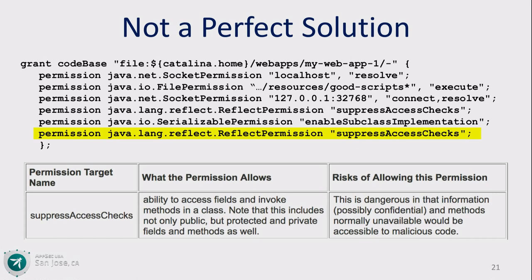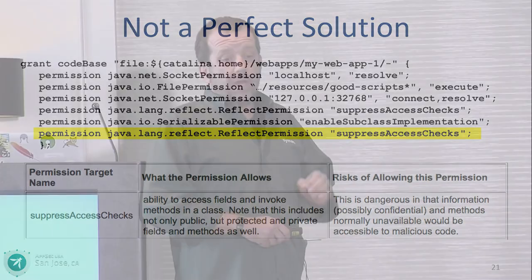The reason only one person raised their hand is that it's not a perfect solution — it's hard to get to work and it has some caveats. One of which is if you use reflection in your application, you have to add a declarative to suppress access checks, which opens another hole. It's not perfect. However, if you at least run your application under the Java Security Manager, you'll learn a lot about what it's doing. You might find some things you didn't even know it was doing, and that will give you insight into how to protect your application.